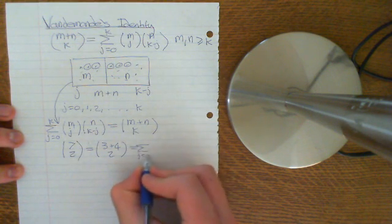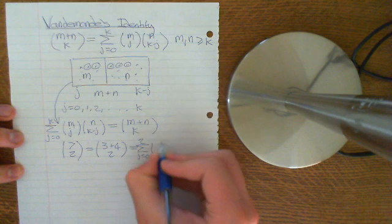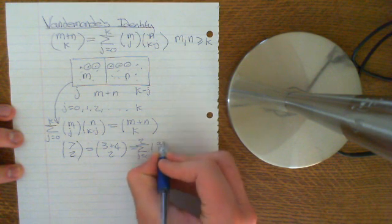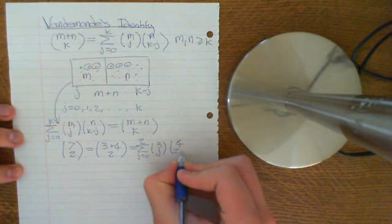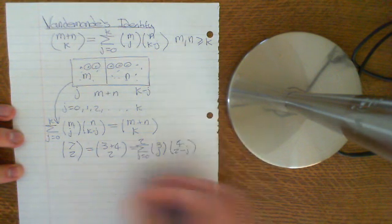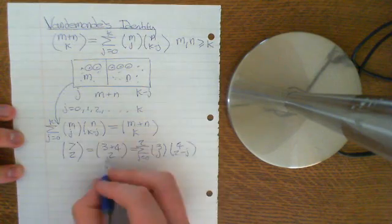So you could say this is j equals zero to two, m will say is equal to three choose j, and n will say is four, and k is equal to two, so we'll want two minus j. Okay, so this great big sum here is equal to that.